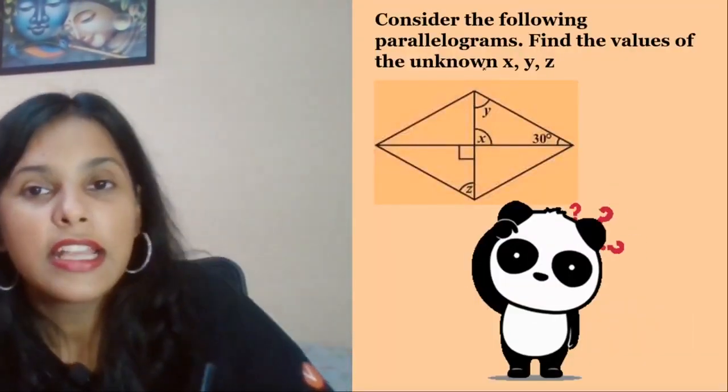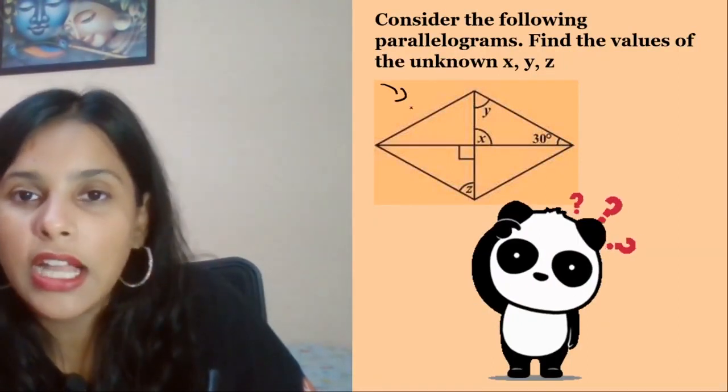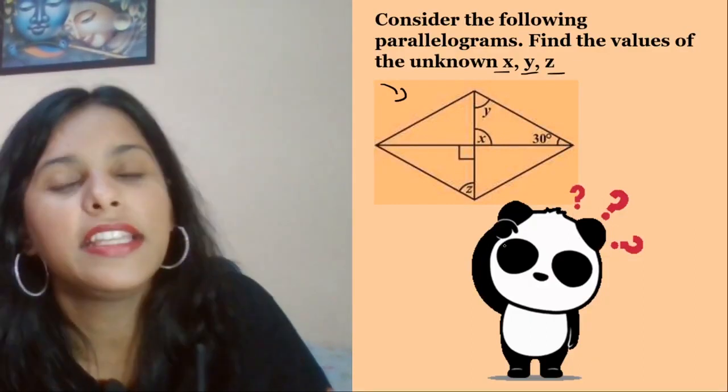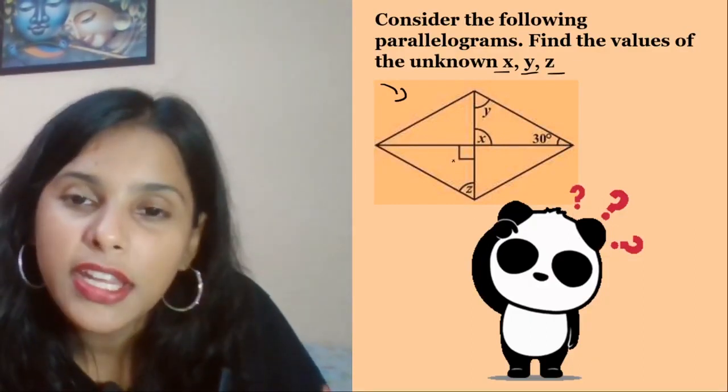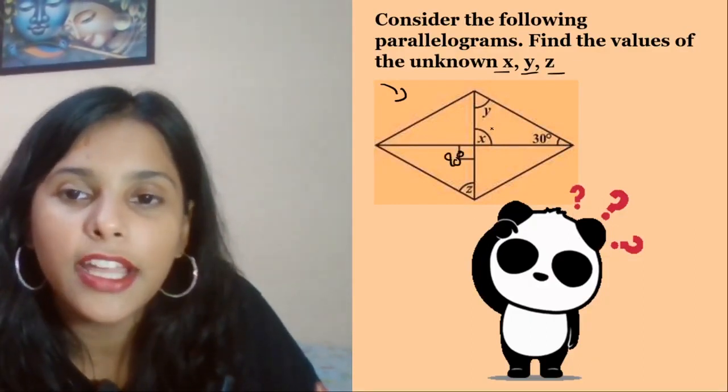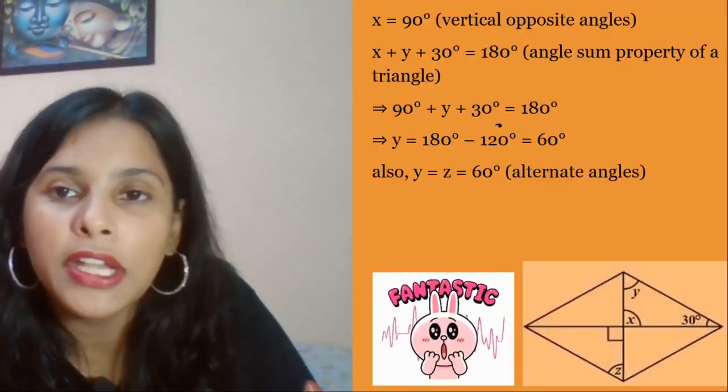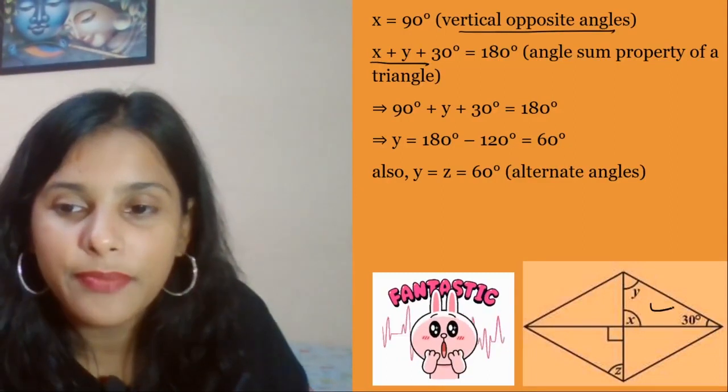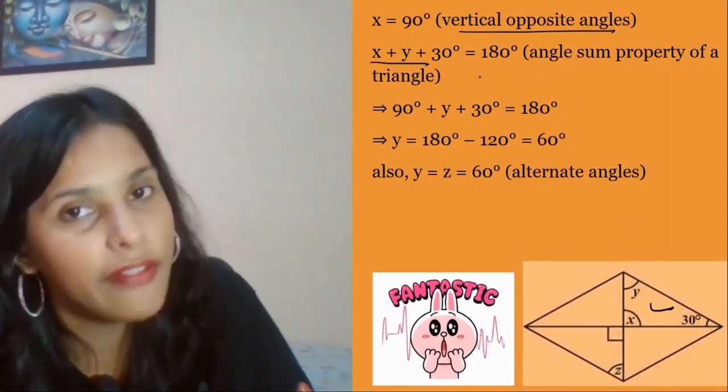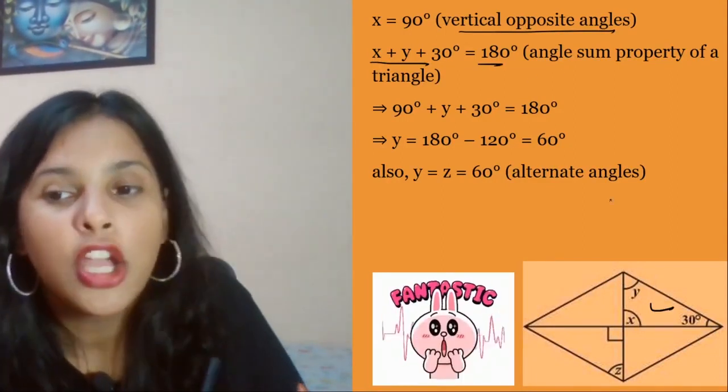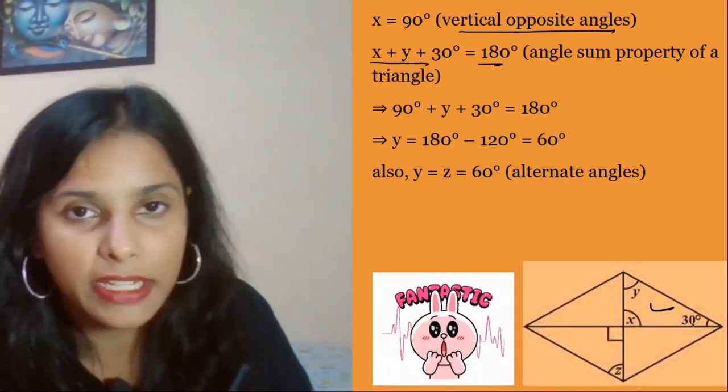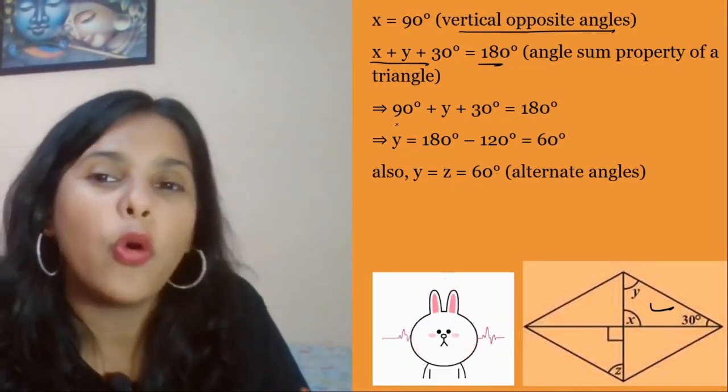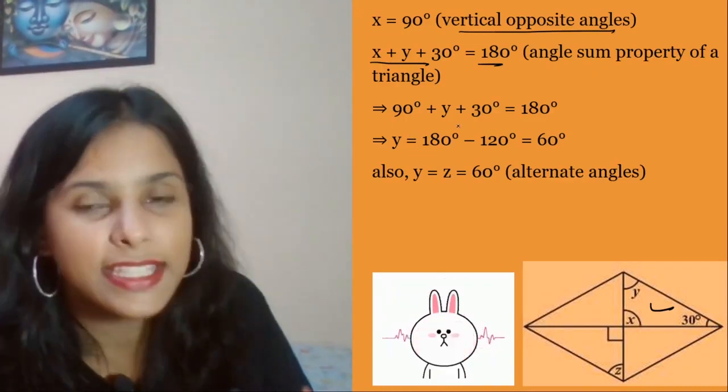Now we will see the following parallelogram. Find the values of x, y, z. This is 90 degrees. So this is also 90 degrees, vertically opposite angles. And you know this triangle sum is 180.